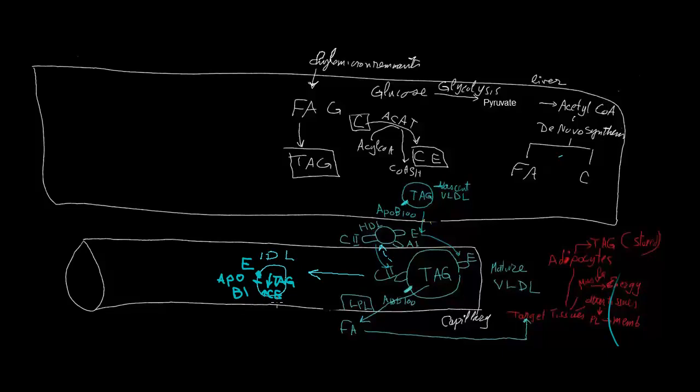The IDL has more than one fate. First, it could be uptaken by the liver cell. On the liver cell membrane, there is a receptor which identifies both apoB100 and E together. So this IDL receptor identifies both apoB100 and apoE together, so the IDL is internalized and degraded inside the liver cell. This is one fate of IDL.